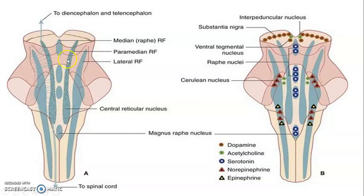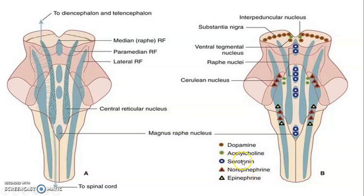There is also the paramedian reticular formation and the lateral reticular formation. The raphe are the median and they use serotonin, while most of the lateral zone uses norepinephrine.